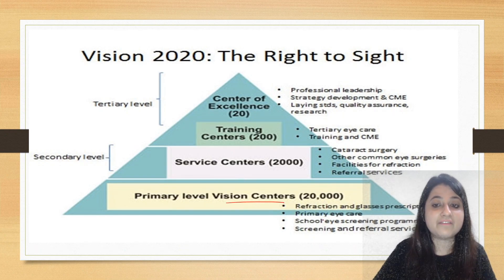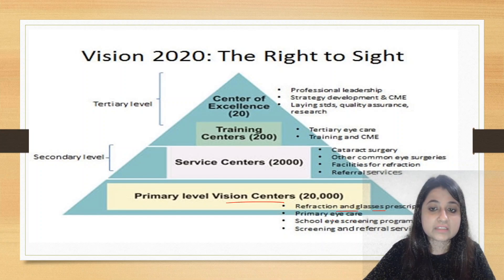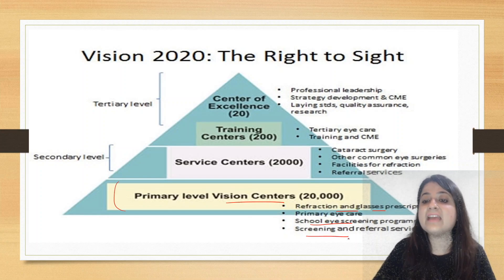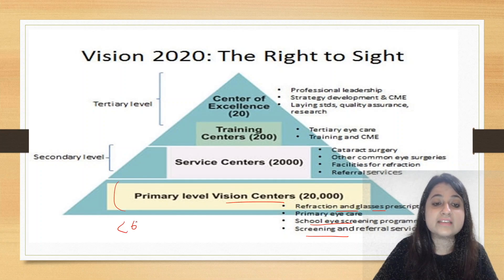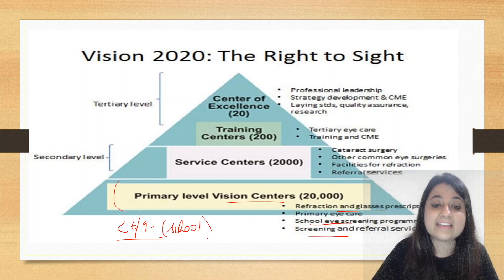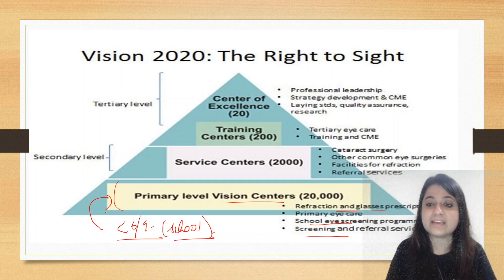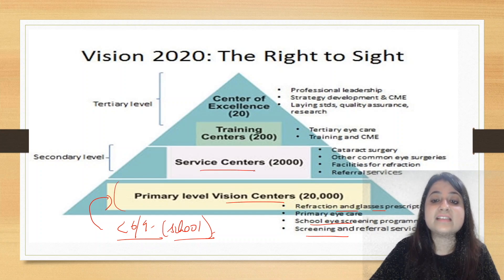Looking at the diagram: at the primary level, Vision Centers at PHC level provide refraction and glasses prescription. School eye care screening is part of this primary level. A teacher in school examines children — if a child's vision is less than 6/9 in the school eye screening program, the teacher refers the child to a primary-level Vision Center for refraction, glasses prescription, or further referral if needed.